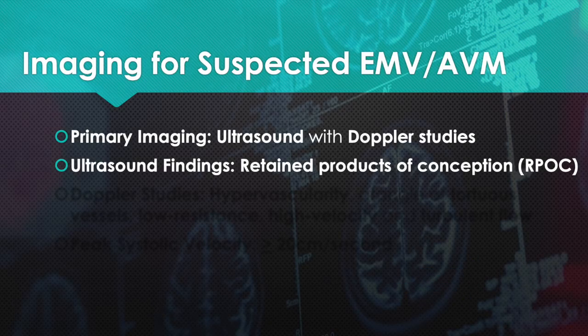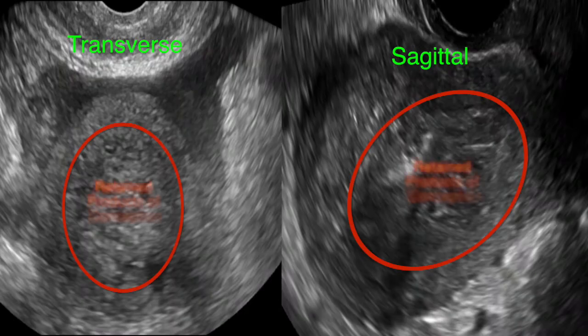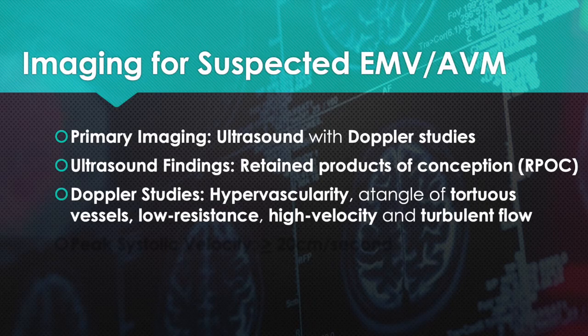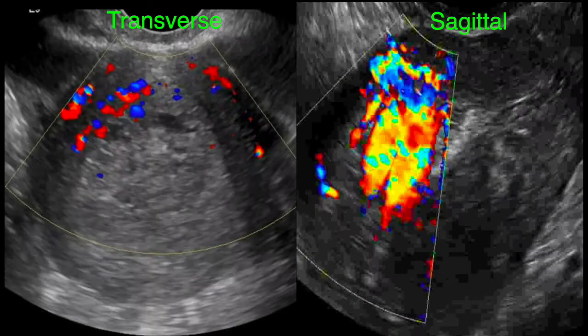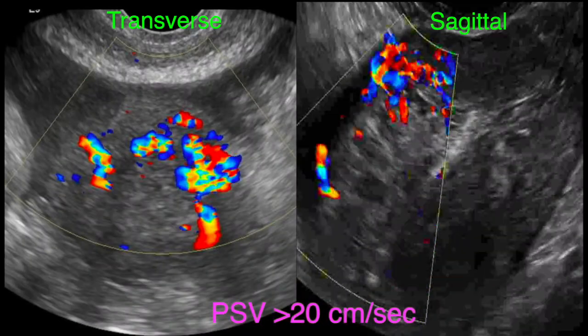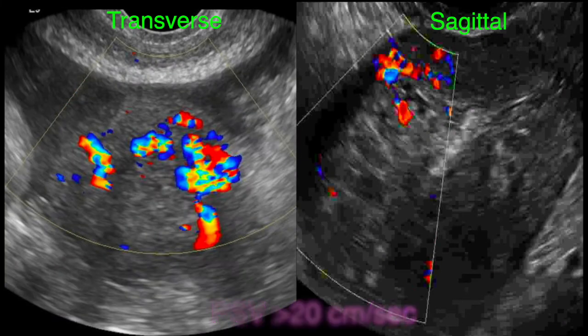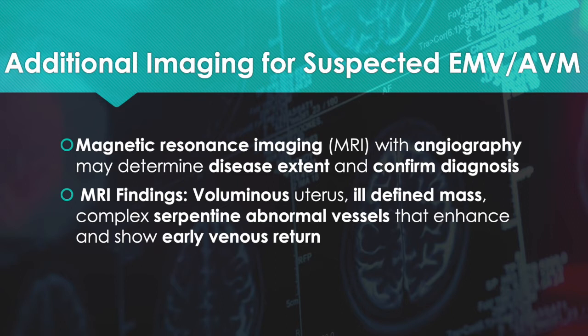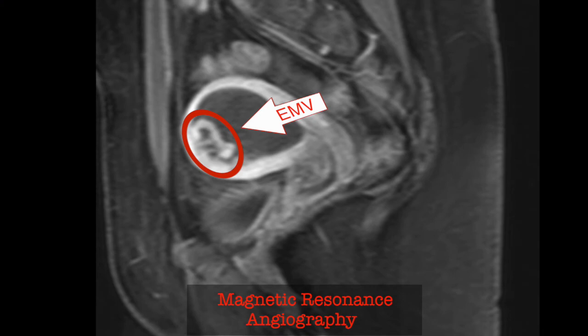The primary imaging for EMV-AVM is ultrasound with Doppler studies. Our ultrasound findings were pertinent for retained products of conception. Doppler studies were pertinent for hypervascularity, a tangle of tortuous vessels with low resistance and high velocity and turbulent flow. Peak systolic velocity was greater than 20 centimeters per second. Additional MRI imaging with angiography may determine disease extent and confirm diagnosis. Our MRI finding was pertinent for a voluminous, ill-defined mass with complex serpentine abnormal vessels that enhanced and showed early venous return.